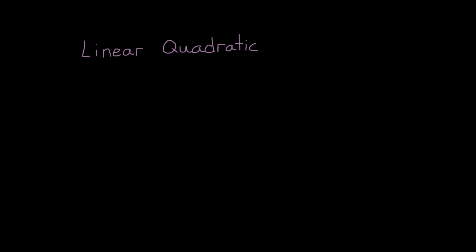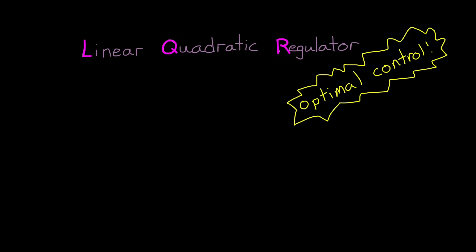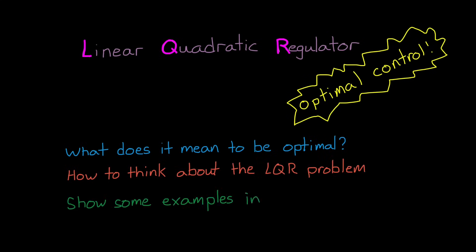Let's talk about the Linear Quadratic Regulator, or LQR control. LQR is a type of optimal control that is based on state space representation. In this video I want to introduce this topic at a very high level so that you walk away with a general understanding of the control problem and can build on this understanding when you're studying the math behind it. I'll cover what it means to be optimal, how to think about the LQR problem, and then I'll show you some examples in MATLAB that I think will help you gain a little intuition about LQR.